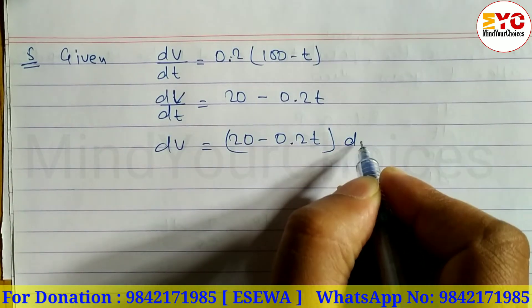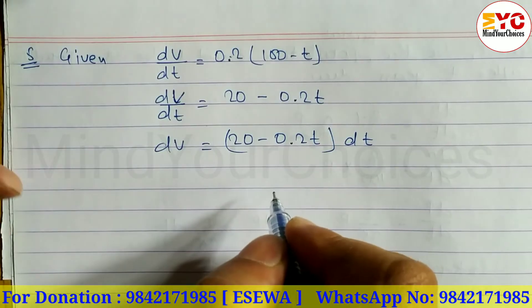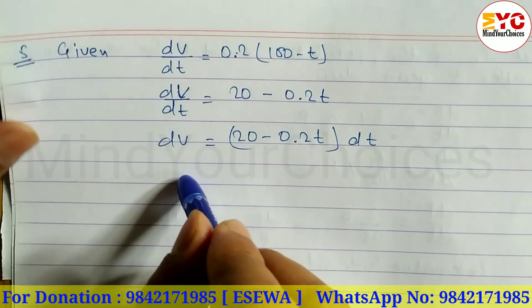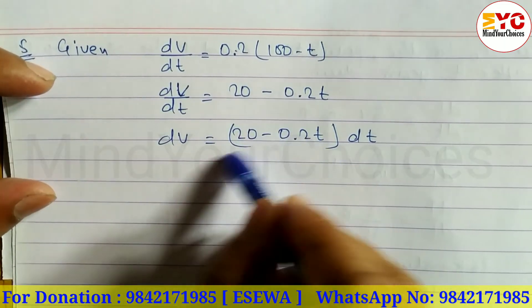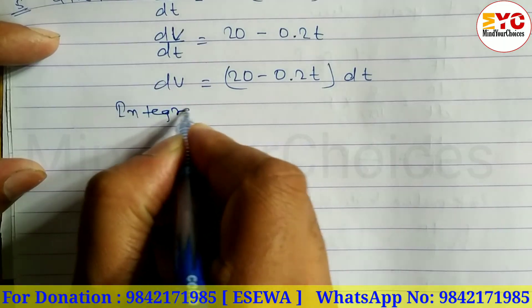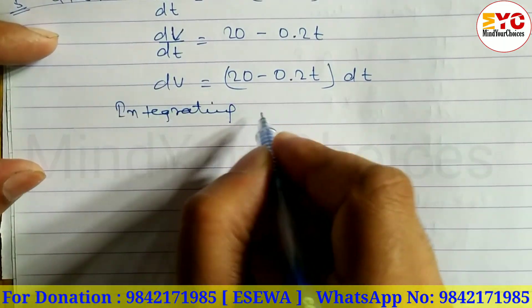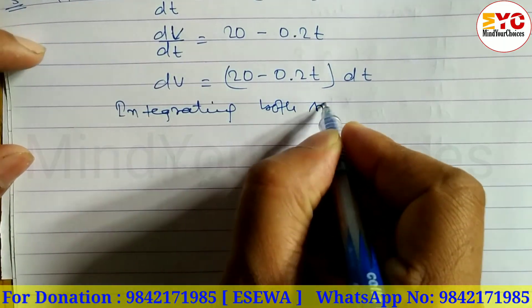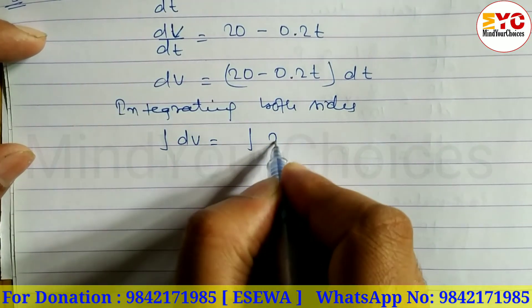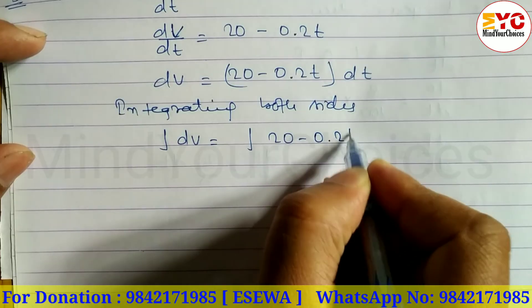20 minus 0.2T, and here we can write dT. Same like question 3 and 4. So we can write here: dV equals (20 - 0.2T) dT. Take a start. Integrating both sides.